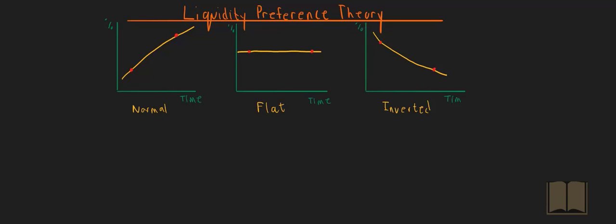Now, the liquidity preference theory is a theory that explains the normal yield curve, the normal upward sloping yield curve.